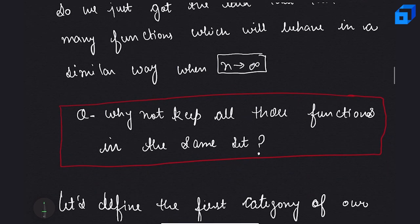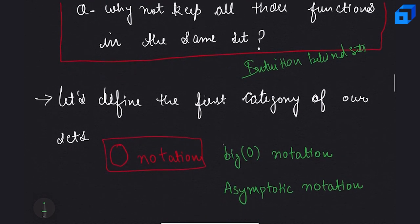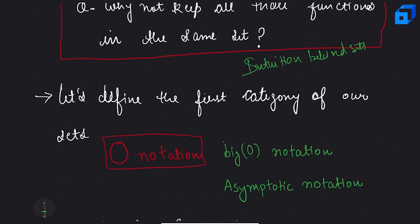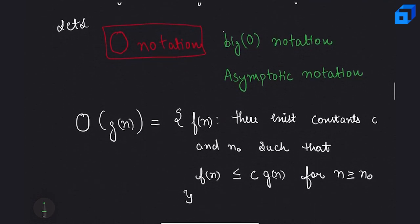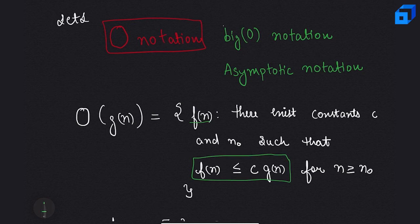There are many functions that behave in a similar way as n tends to infinity, so why not keep all such functions in the same set? This is the intuition behind asymptotic sets. Let's define our first category: Big-O notation, also called asymptotic notation. We say f(n) is O(g(n)) if there exist constants c and n₀ such that f(n) ≤ c·g(n) for all n ≥ n₀.